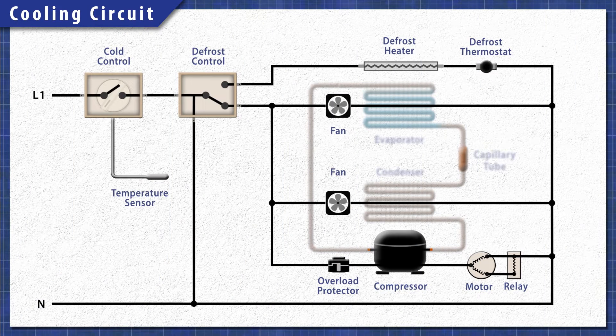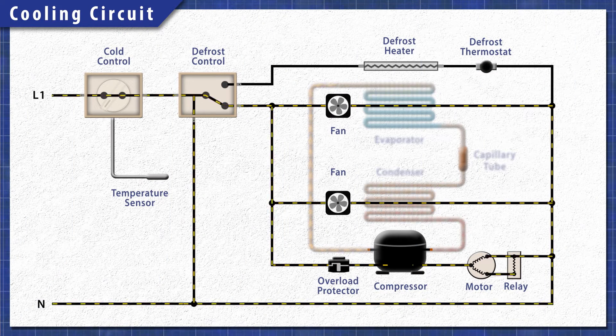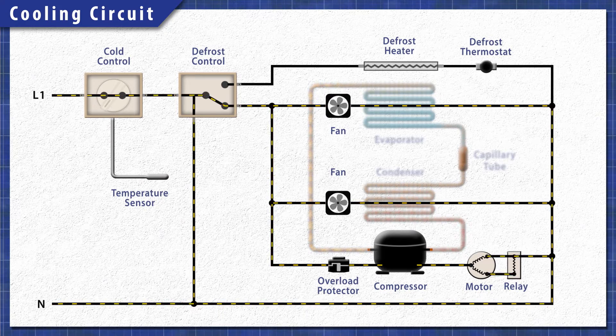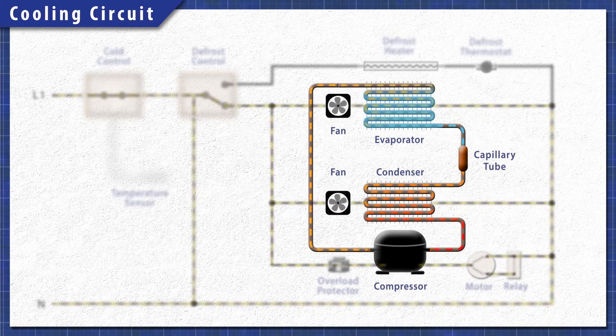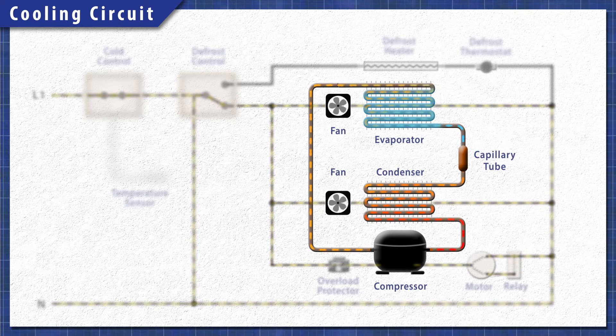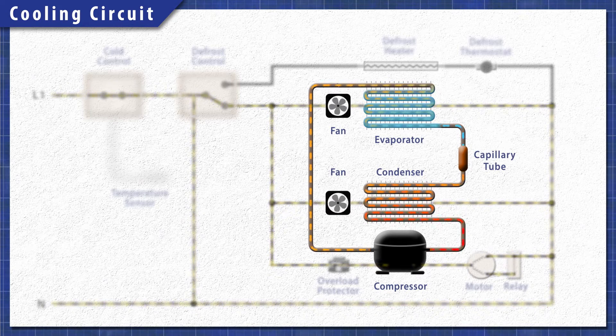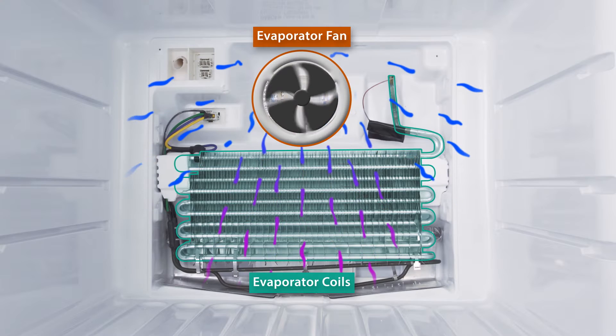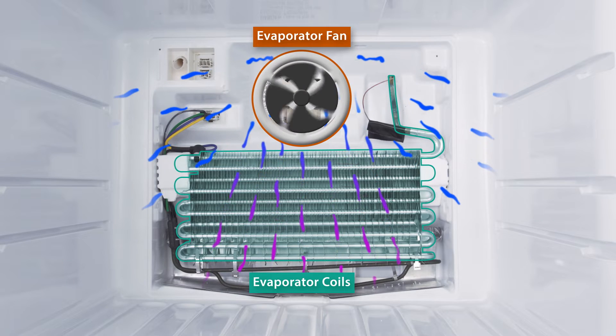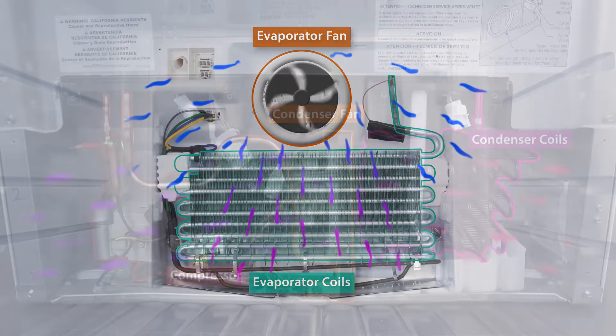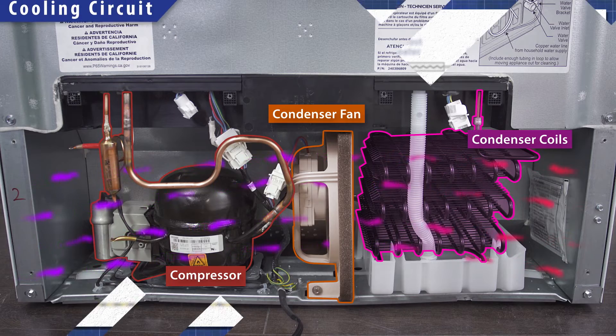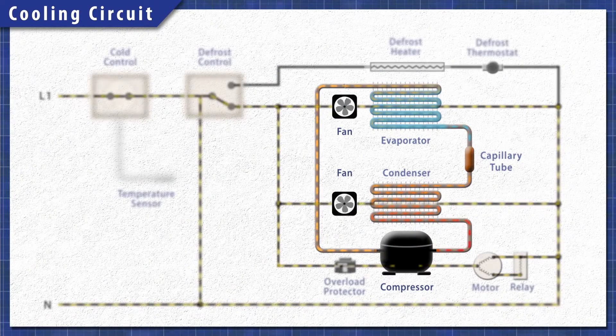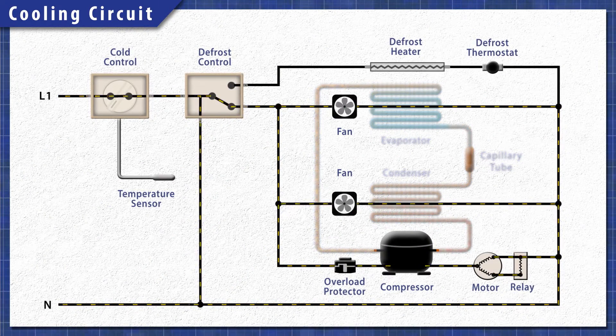All refrigerators work in the same basic way. When cooling is needed, the cold control sends power to the cooling circuit. The compressor pushes the refrigerant through the system. In the freezer, heat is extracted by the evaporator coils and is released through the condenser coils behind the refrigerator. This process continues until the set temperature is reached.